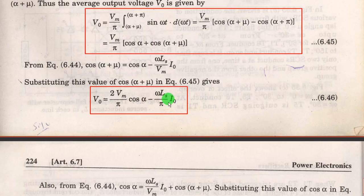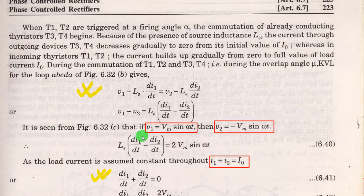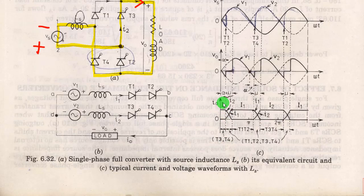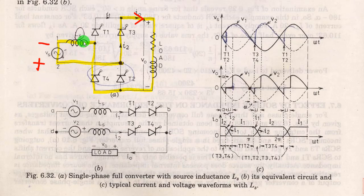From the expression we can conclude that if I0 is higher, the average voltage will decrease, and if Ls is higher, the average voltage will also decrease. Physically, if the load current I0 is higher, the outgoing thyristors take more time to fall to zero and the incoming thyristors take more time to rise to the load current level, making the intermediate overlap region larger — so the overlap angle is higher. And if the source inductance Ls is higher, there will be more voltage drop in both the positive and negative half cycles, so the overall average voltage decreases.